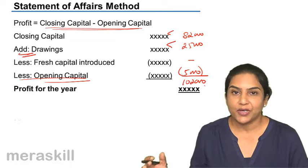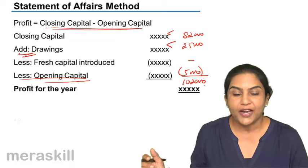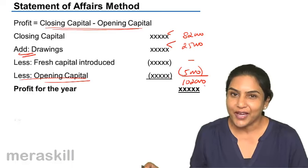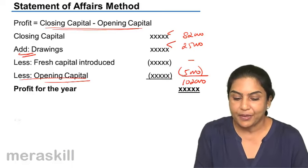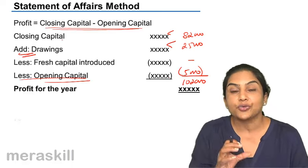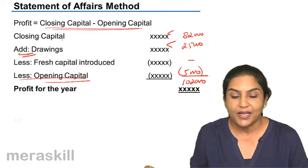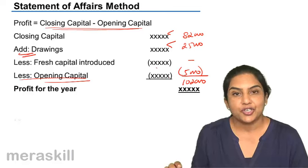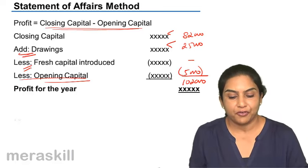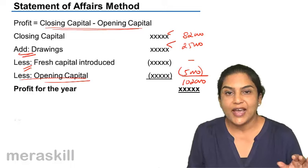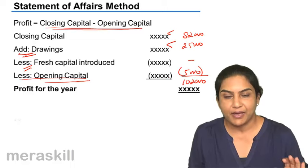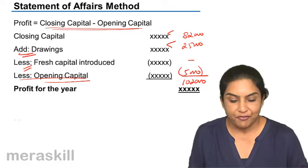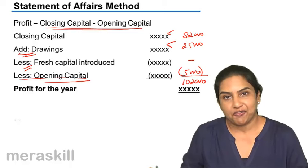However, if drawings were made, add the amount of drawings to arrive at the profit for the year. If fresh capital was introduced, remove that amount because the increase in closing capital due to fresh capital is not part of profit. Therefore, remove any fresh capital introduced to get the profit for the year. Ascertainment of profit under the statement of affairs method: closing capital minus opening capital, add back drawings if any, reduce fresh capital if any.